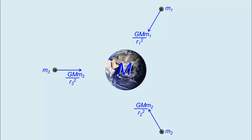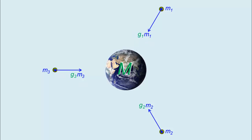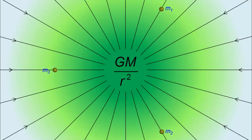Look at the forces. Notice the common term gm over r squared. We are going to call this the gravitational field strength, denoted by small g. Now we can replace all the gmm over r squared with mg. Basically, we imagine that the Earth produces a gravitational field around it, and it is the field that exerts gravitational forces on all the masses sitting in it, causing them to undergo gravitational acceleration.